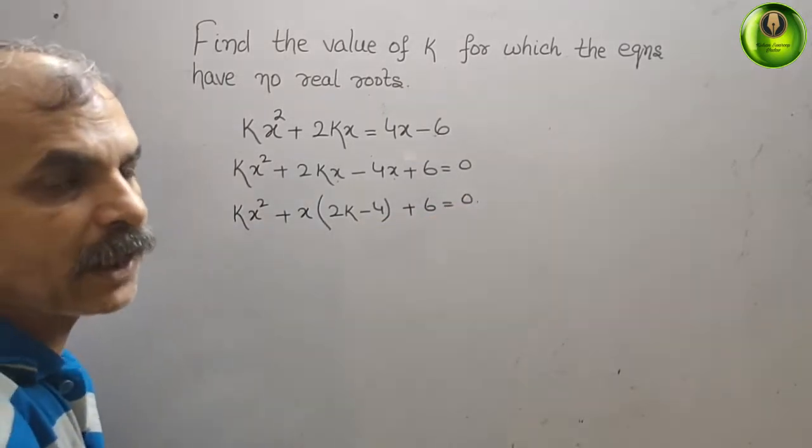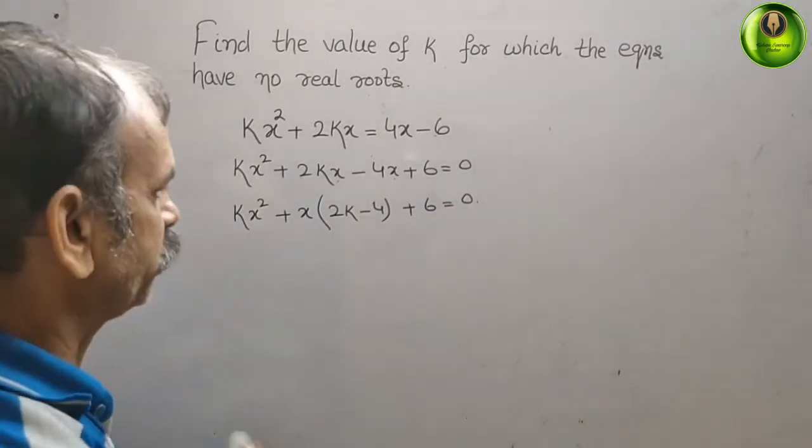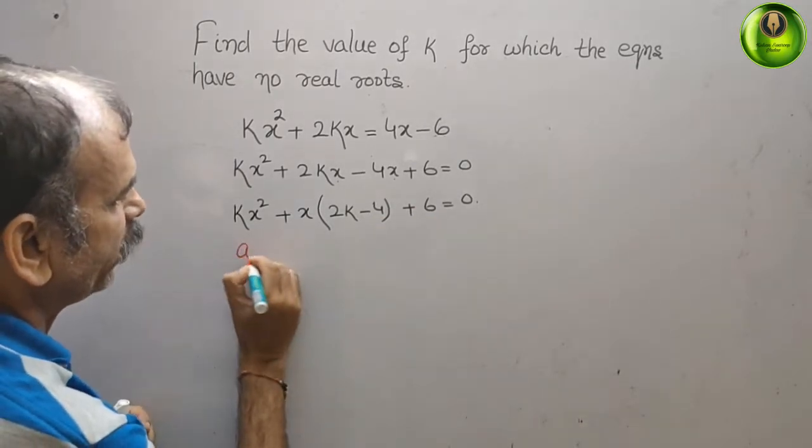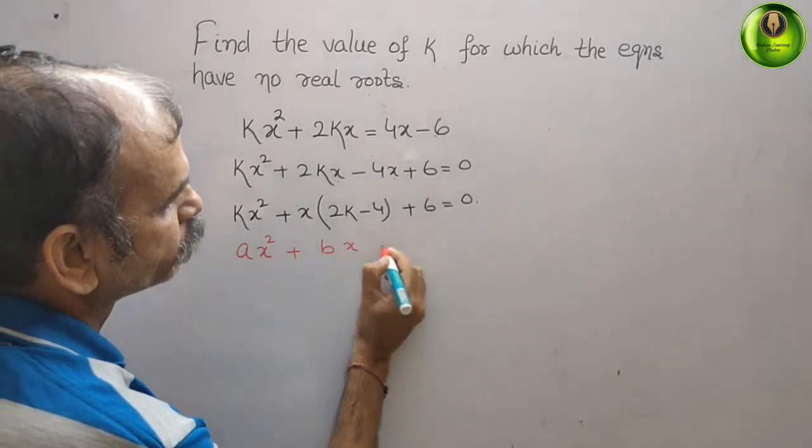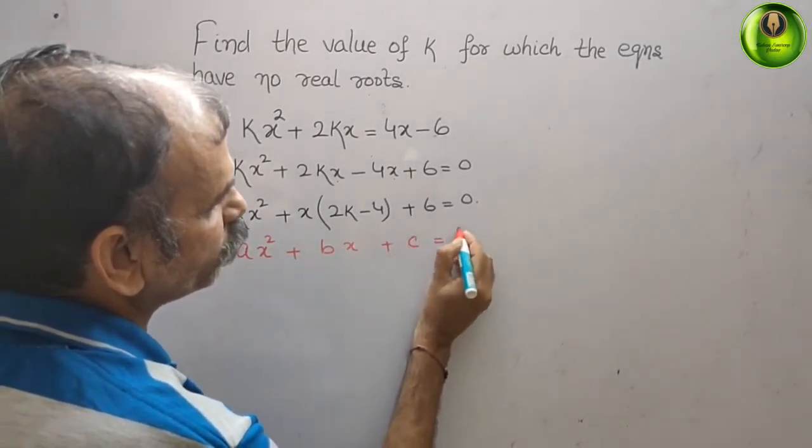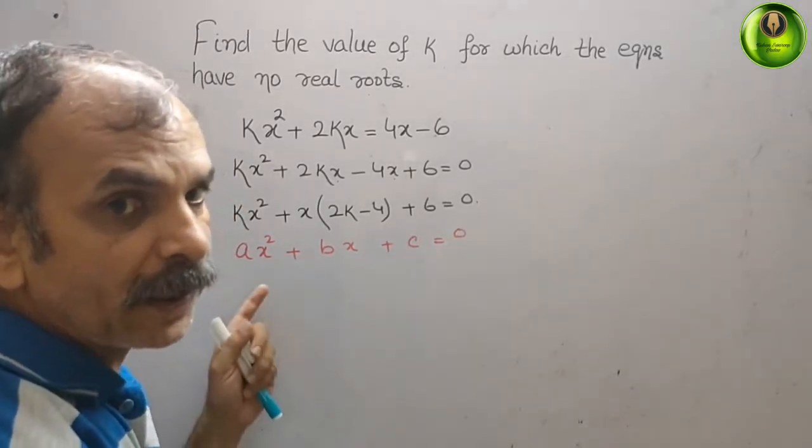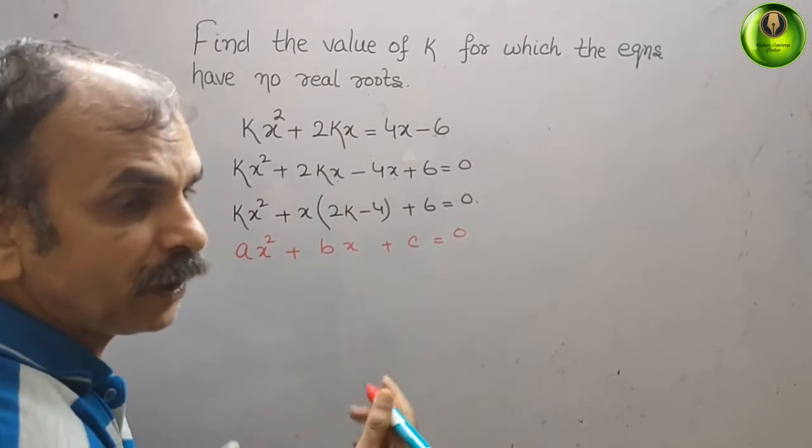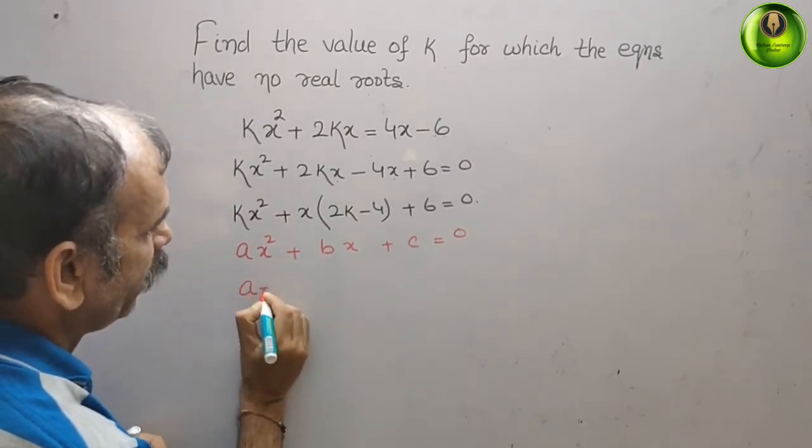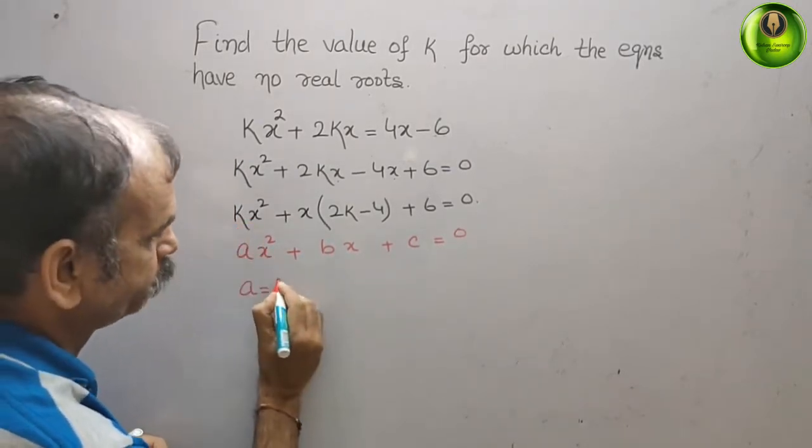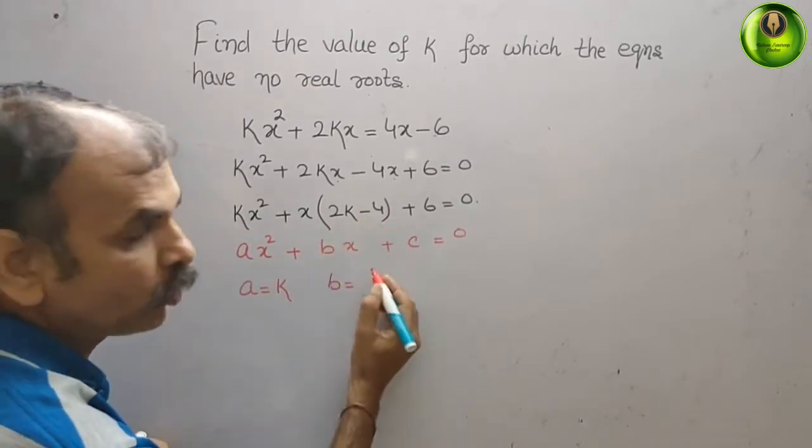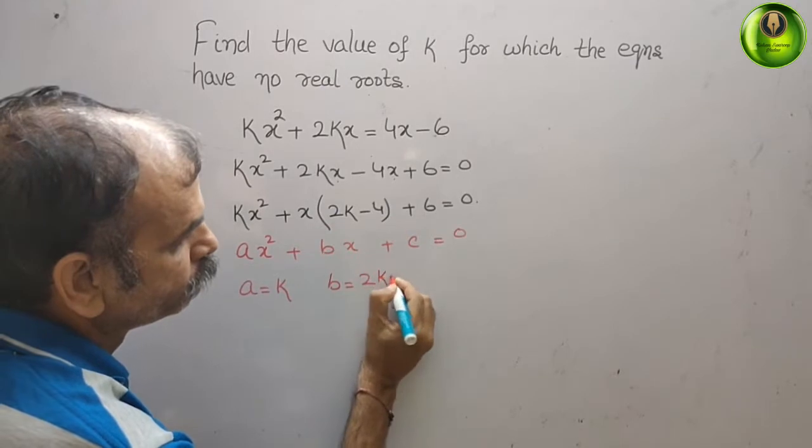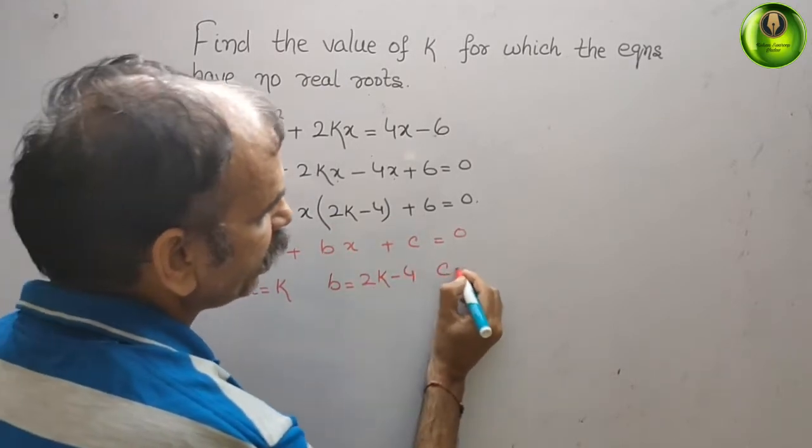Now we will write the standard form of quadratic equation: ax² + bx + c = 0. Here a is k, the coefficient of x². b is 2k - 4, and c is 6.